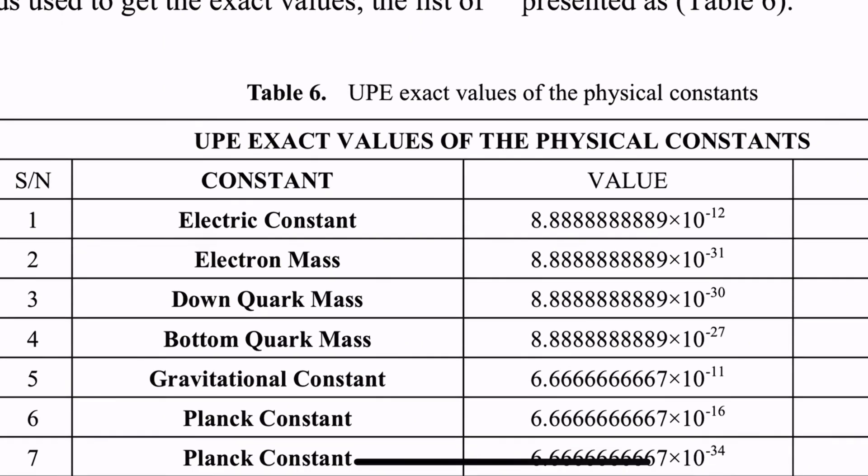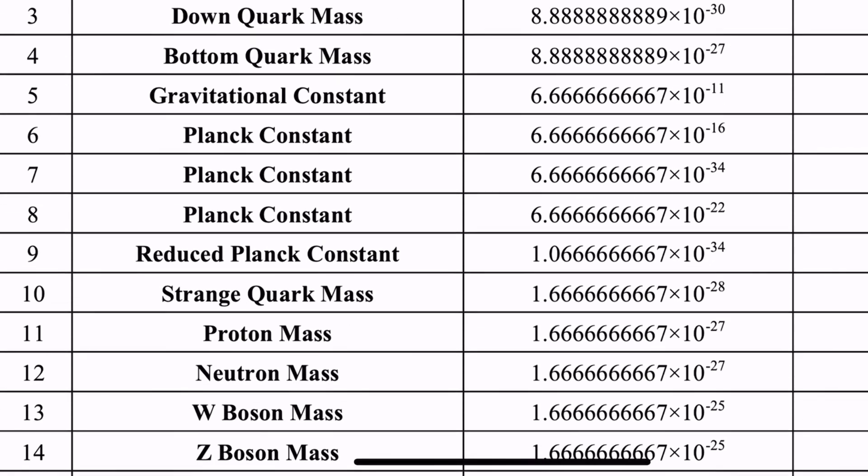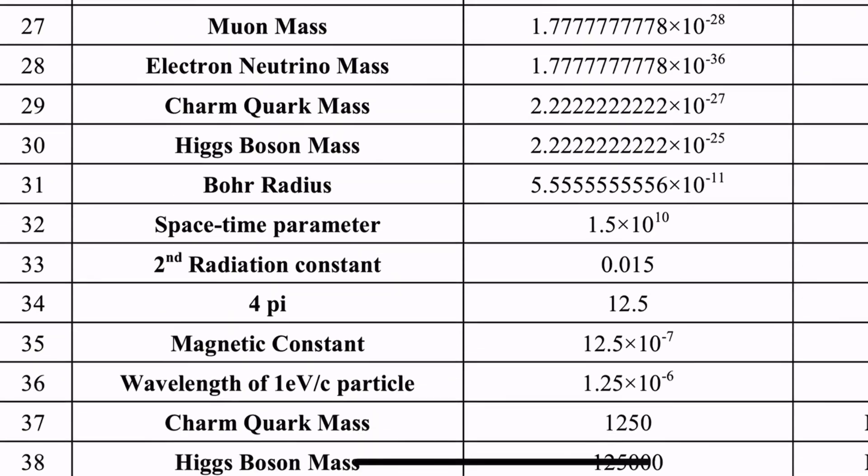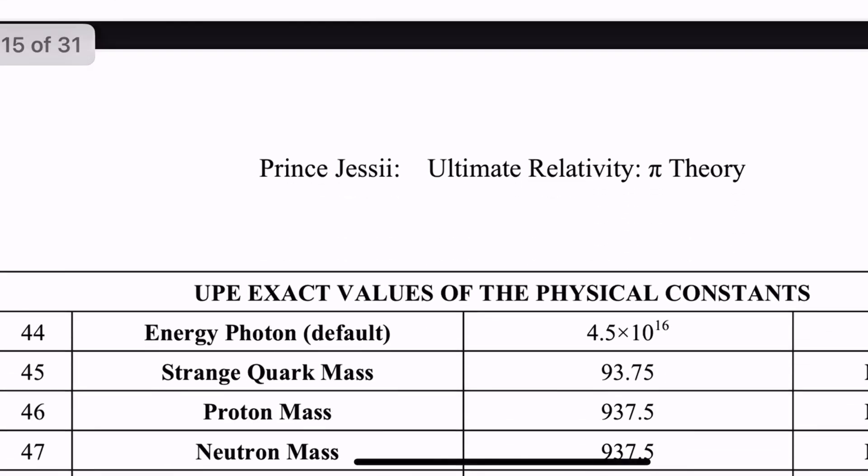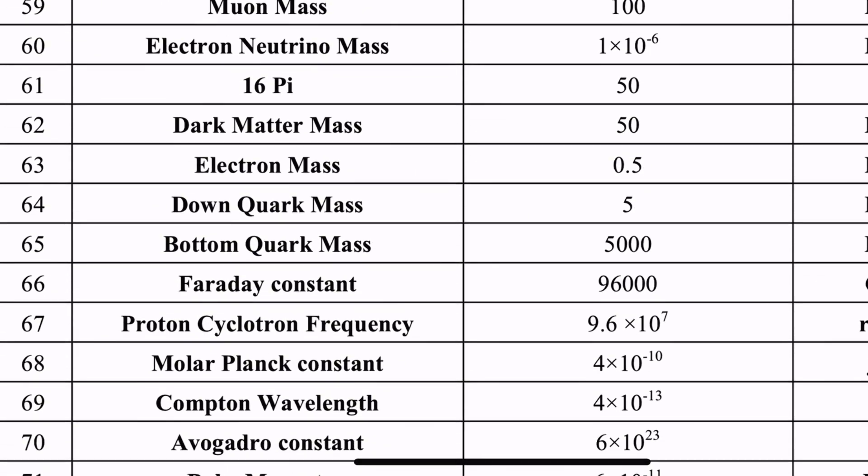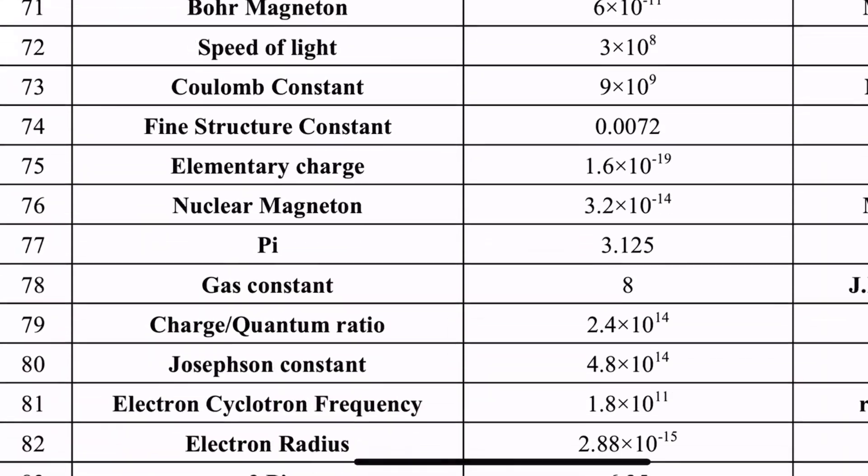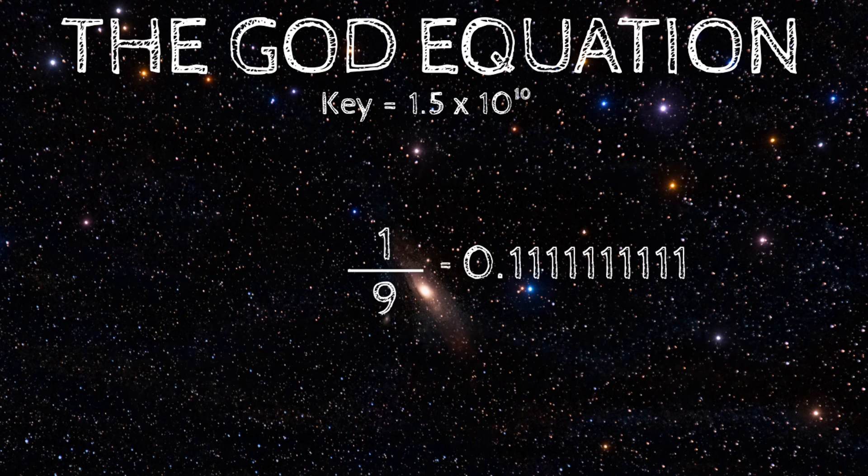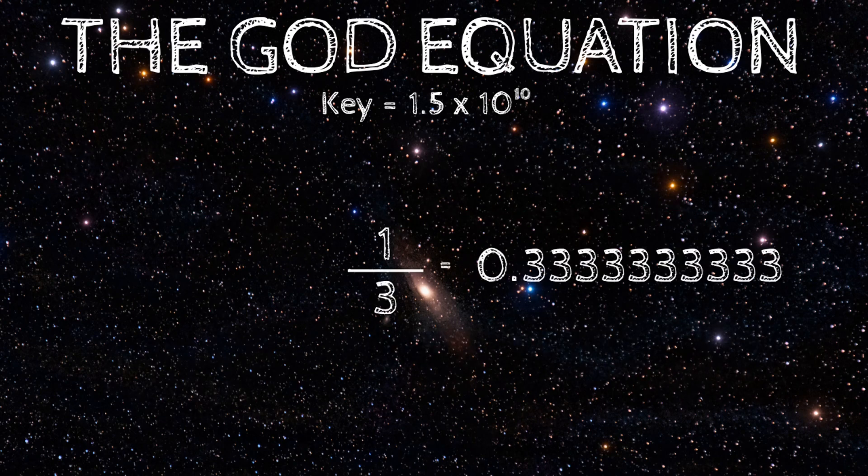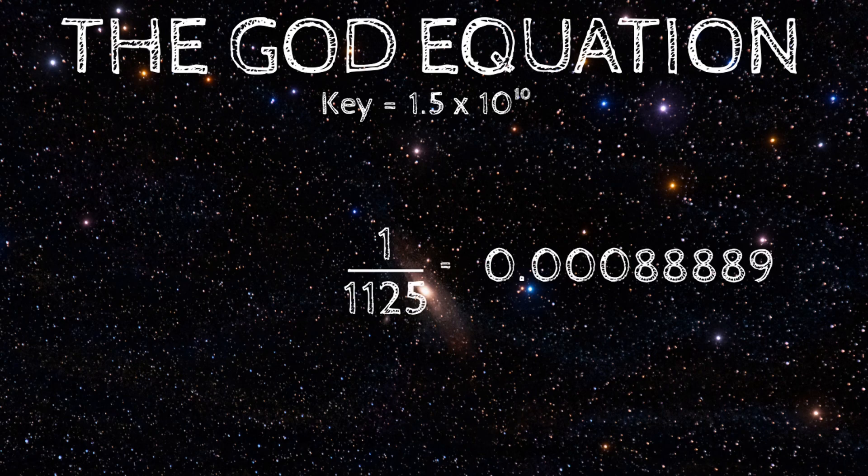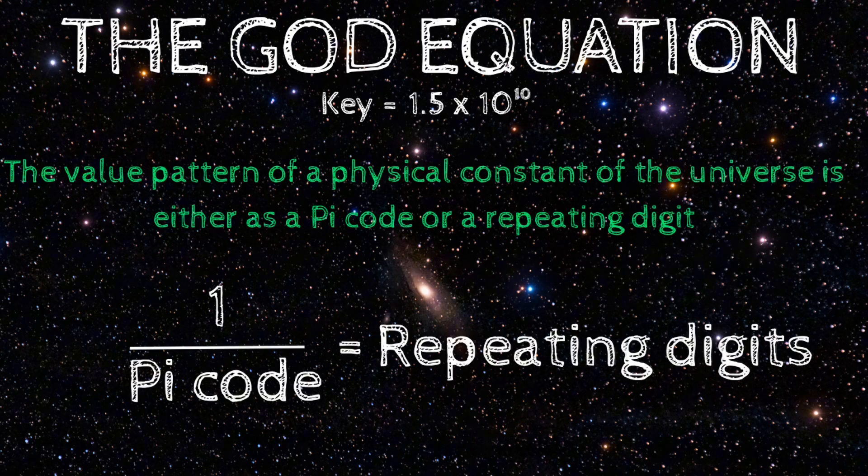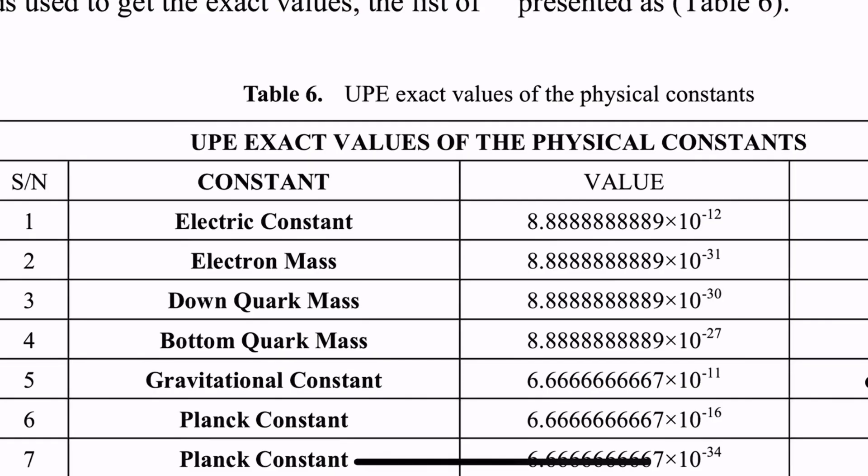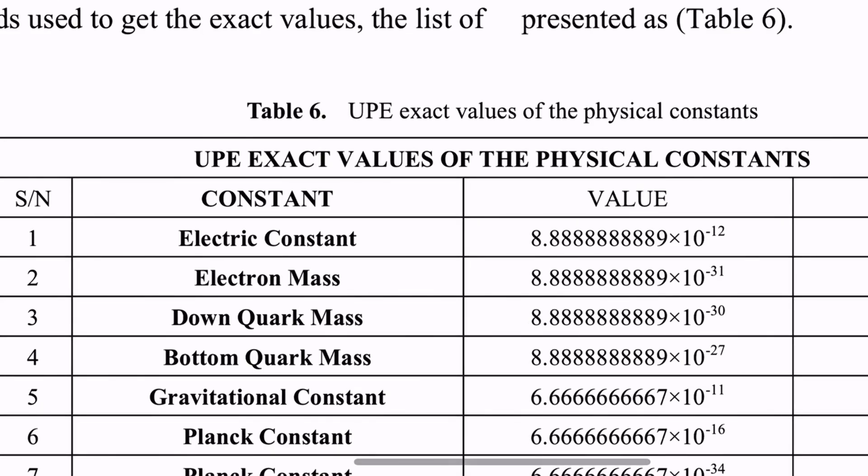You can also observe that there is a pattern behind the values of the physical constants. The physical constants are in form of the pi codes itself or values with repeating digits. The value patterns of the physical constants are all in pi codes. The value patterns as repeating digits is due to the fact that the inverse of a pi code is a repeating digit. For example, 1 over 9 produces this, 1 over 3 produces this, 1 over 11.25 produces this, 1 over 15 produces this, and so on. So again, the value pattern of a physical constant of the universe is either as a pi code or the inverse of a pi code.